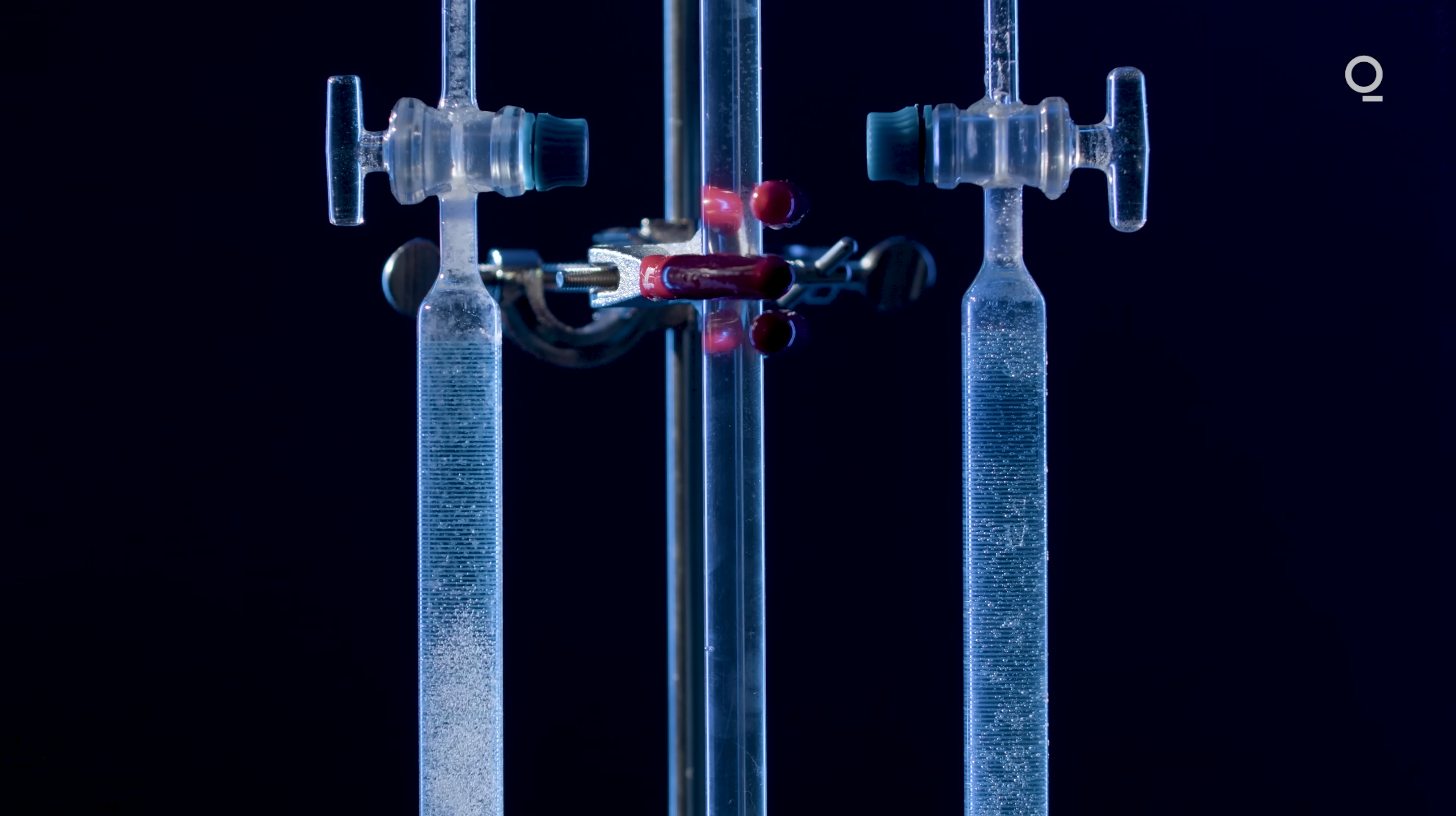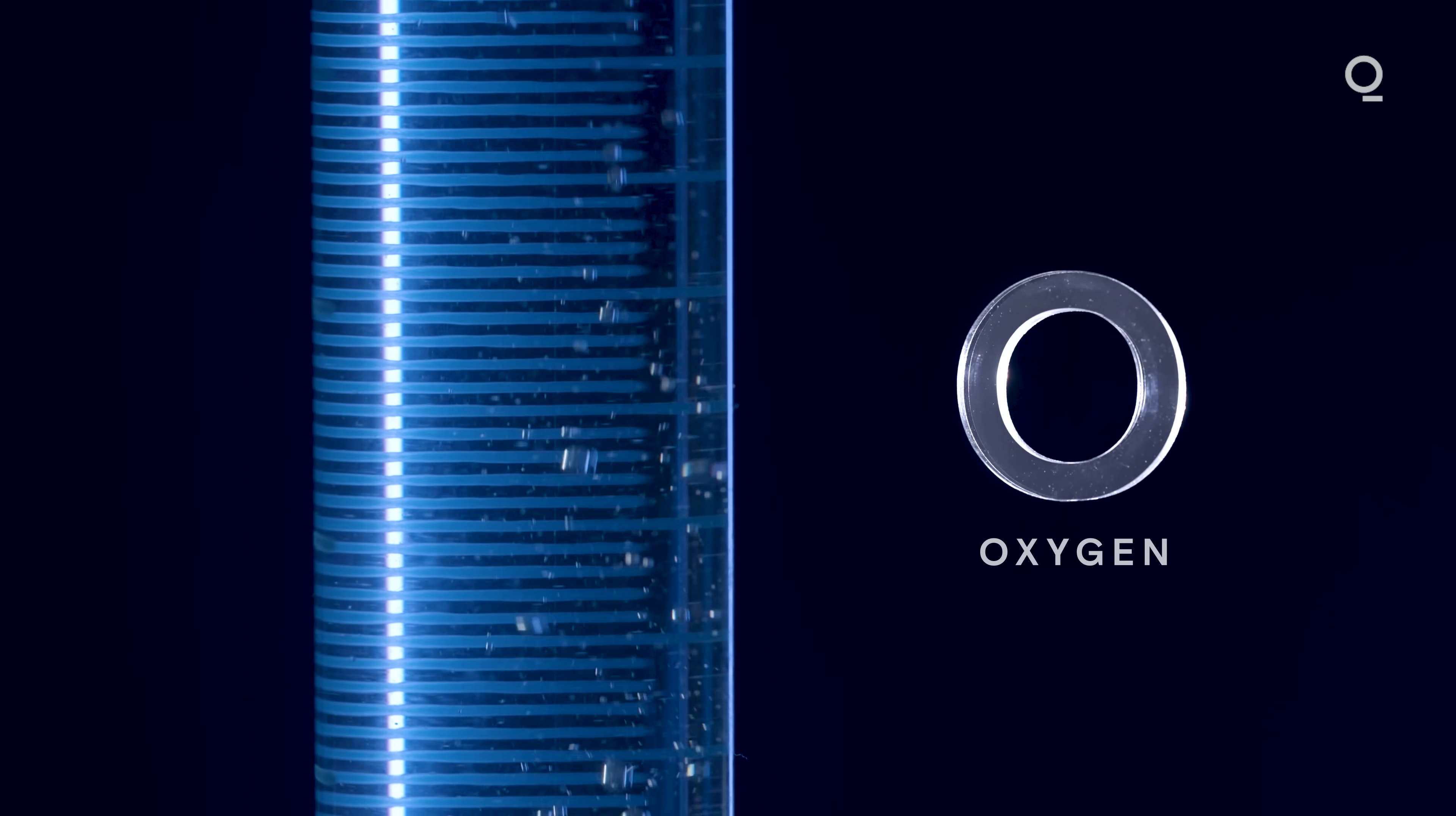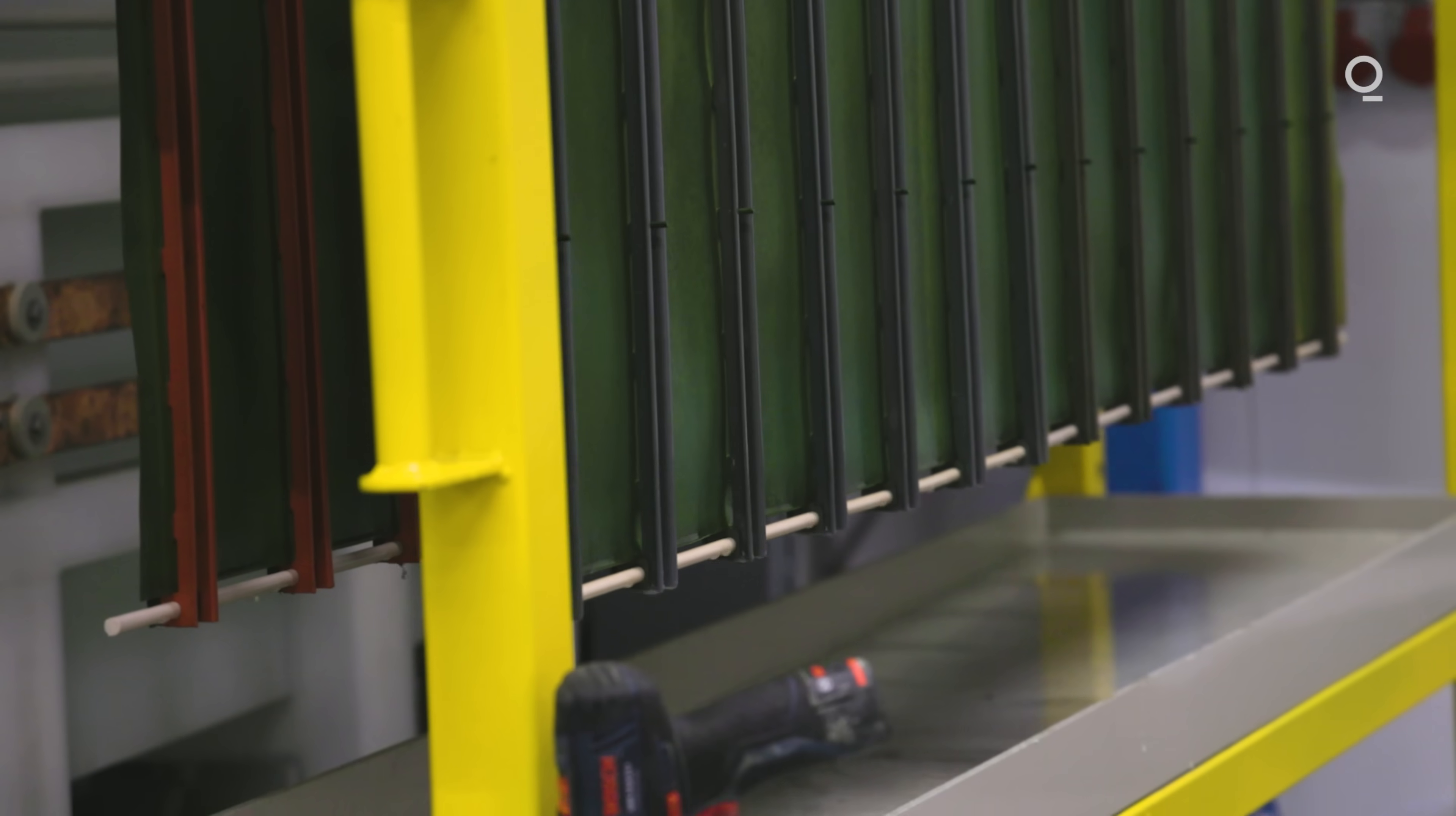Conventional electrolyzers use electricity not just to create hydrogen molecules, but also to separate out unwanted oxygen molecules. H2 Pro found a way to separate the oxygen using heat instead. We have the oxygen being released just by raising the temperature. We're releasing the oxygen without applying any power. This is the reason why we can be so much more efficient.